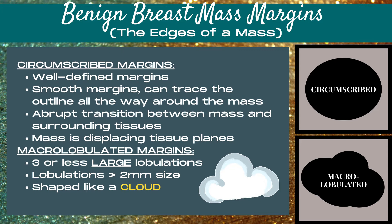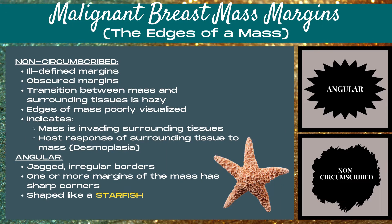Overall, the mass is shaped like a cloud. Now for malignant breast mass margins. The first is known as non-circumscribed — these are ill-defined, obscured margins. The transition between the mass and the surrounding tissue is hazy, and the edges of the mass are poorly visualized. This indicates that the mass is invading surrounding tissues and/or that there's a host response of the surrounding tissue to the mass.